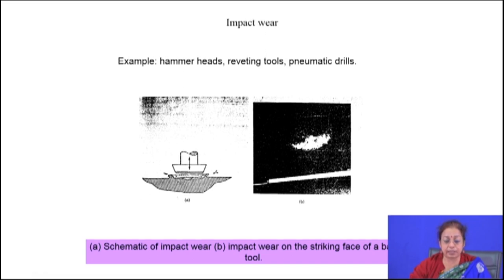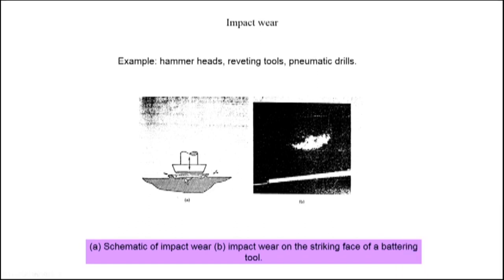In impact wear, you find surface deformation followed by subsurface failure and removal of material in chunks. On the surface you find very large holes in a discontinuous fashion. To minimize this kind of wear, you should look at hard facing operations — iron, cobalt, or nickel-based super alloys and hard faced alloys are available. You apply a typical weld overlaying technique to develop a hard faced layer on the surface, which helps the component resist impact wear.